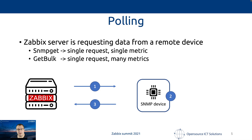Polling: a Zebix server requests data from a remote device by opening a connection and asking for a single metric — a normal SNMP GET — or many metrics in a single request, which is a GET bulk. Hopefully the device will respond and give back the metrics that were requested.